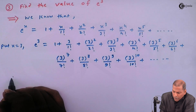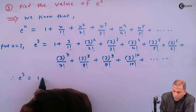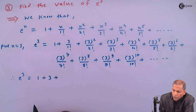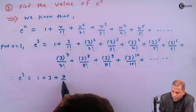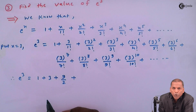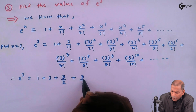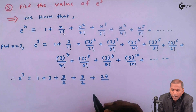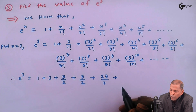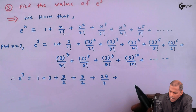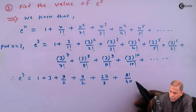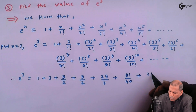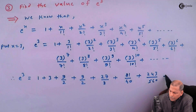If we simplify this, we get e³ equal to 1, plus 3 upon 1 factorial gives 3, then 3 squared upon 2 factorial gives 9 upon 2, which is 4.5, plus 3 cubed upon 3 factorial gives 27 upon 6, plus 3 raised to 4 upon 4 factorial gives 81 upon 24, plus 3 raised to 5 upon 5 factorial gives 243 upon 120, plus 3 raised to 6 upon 6 factorial, and continuing.